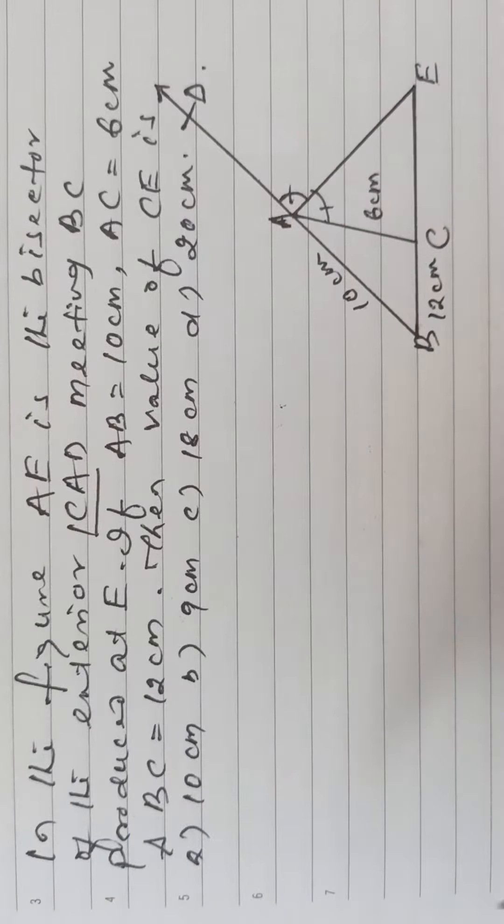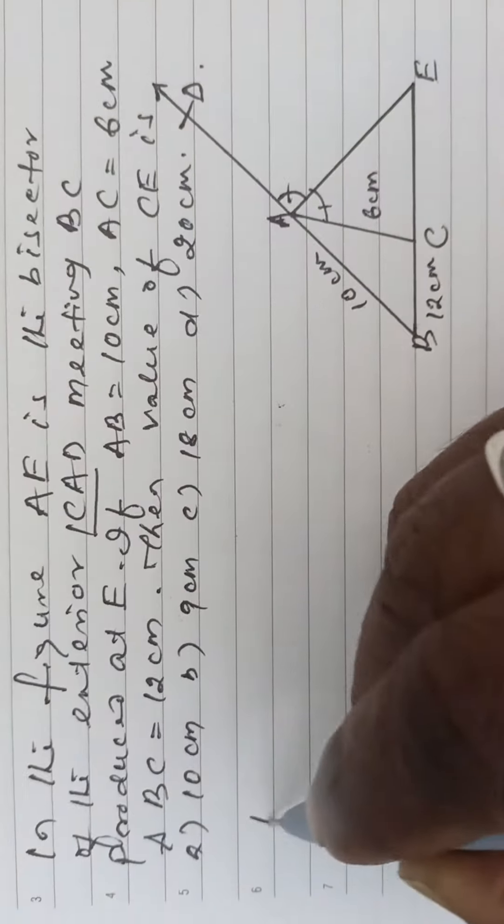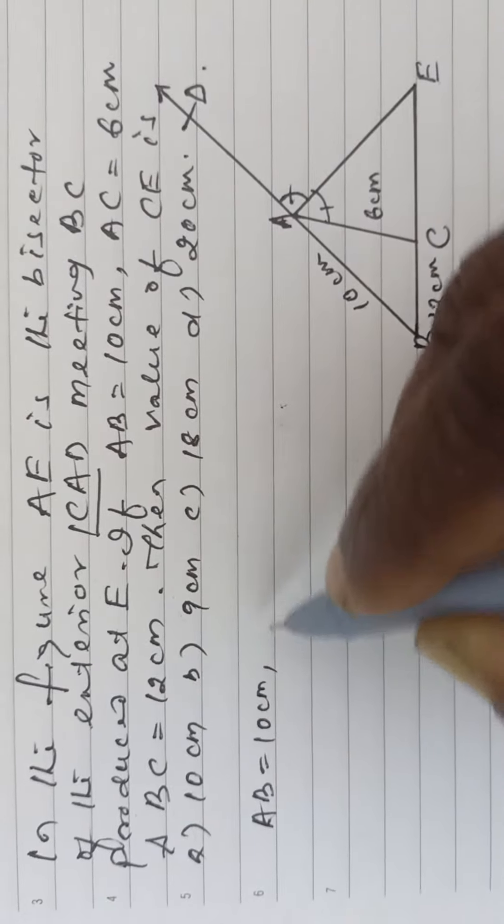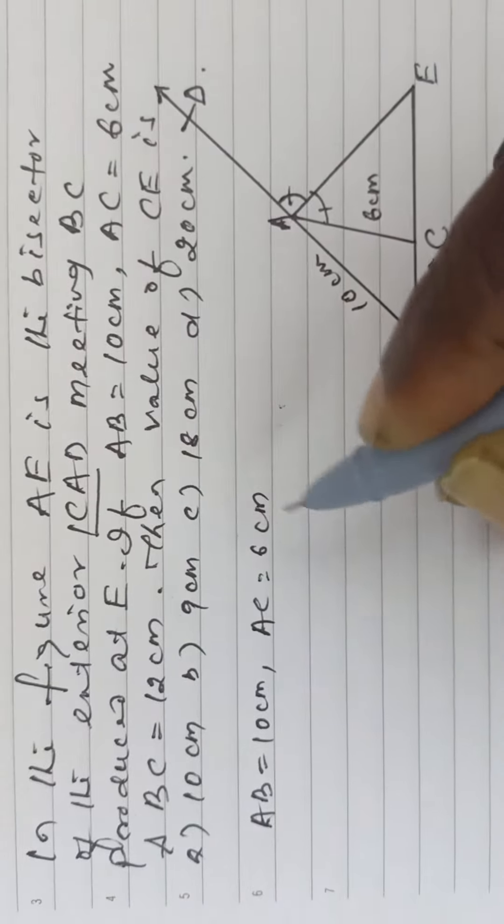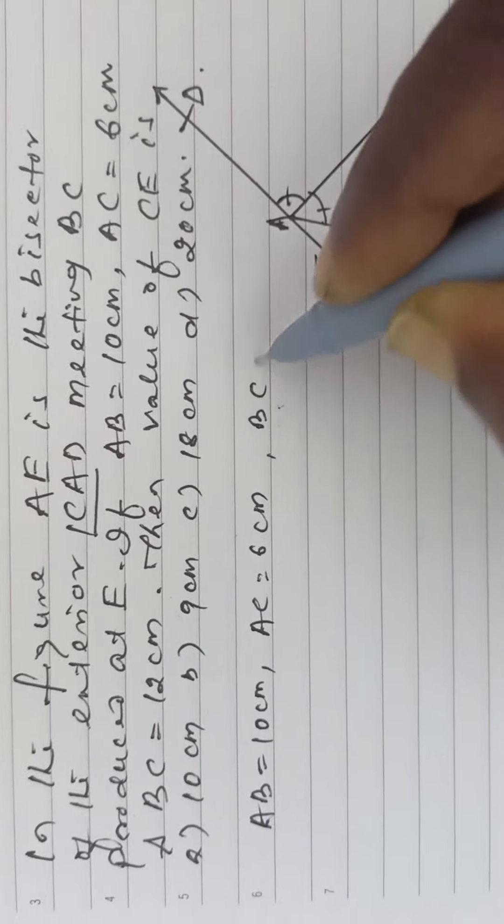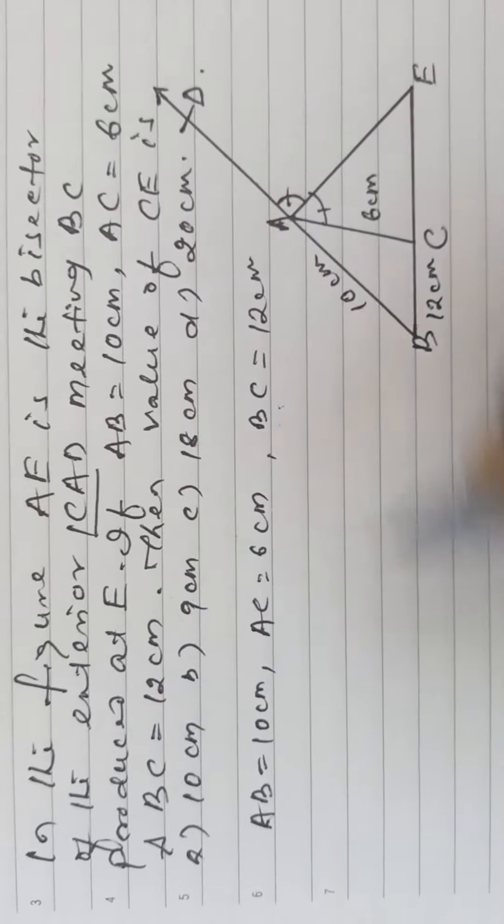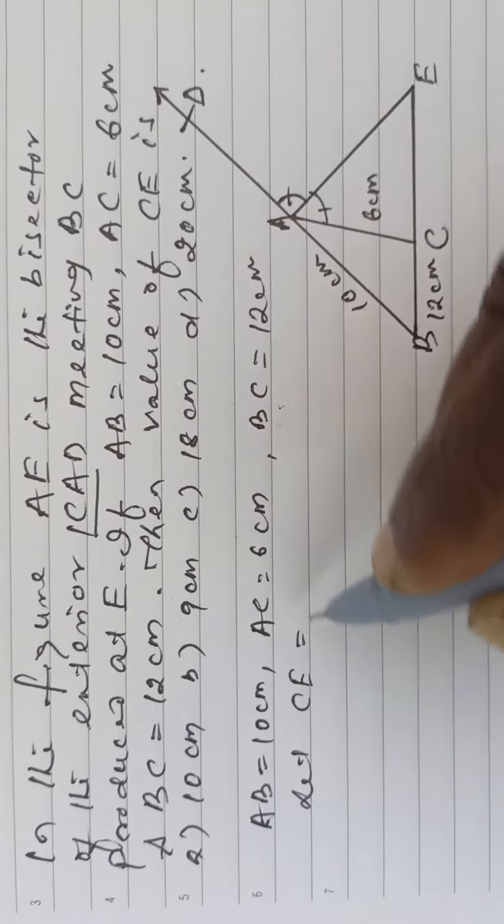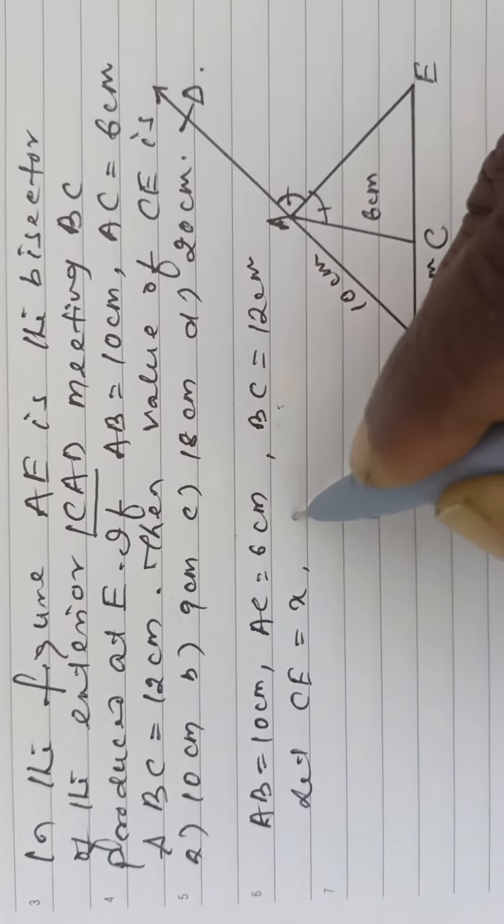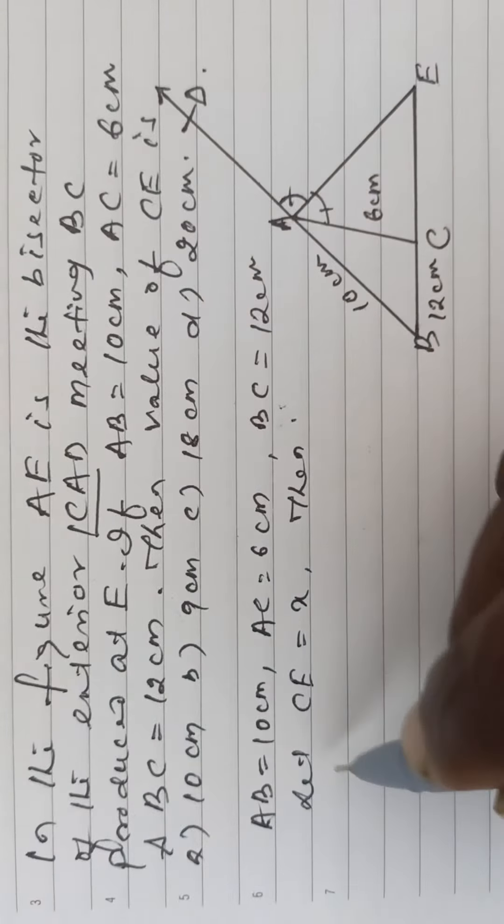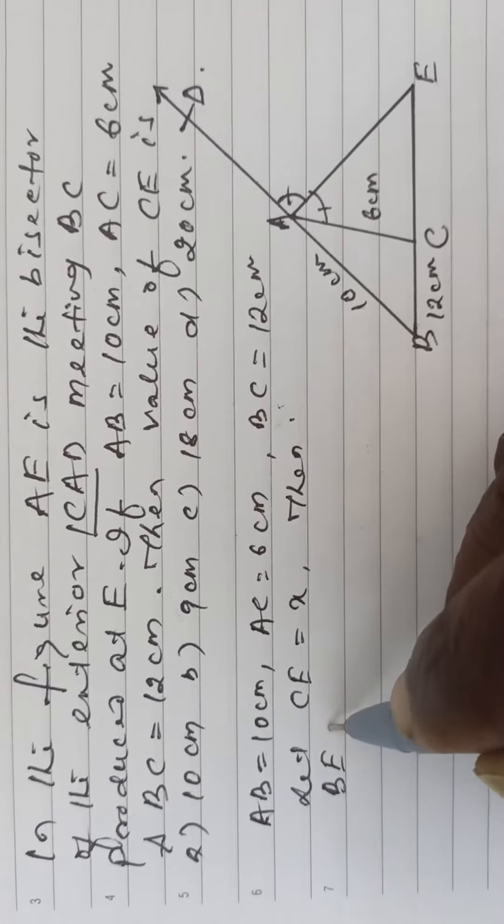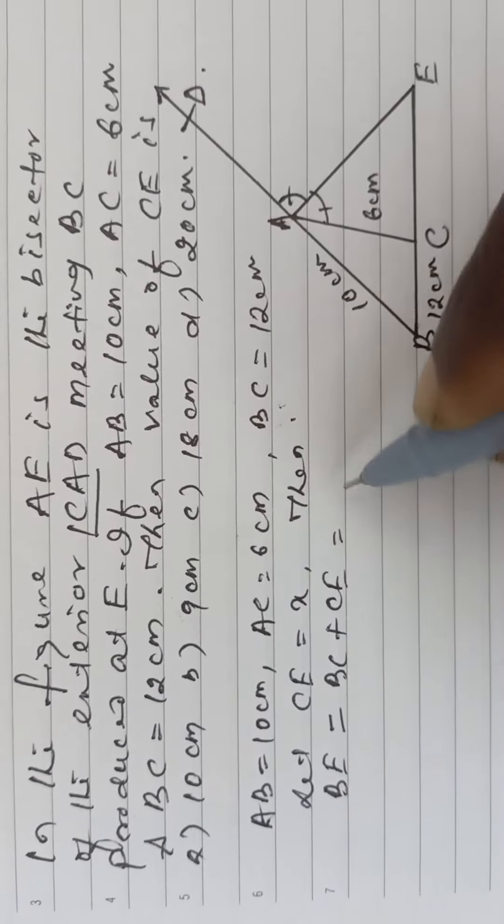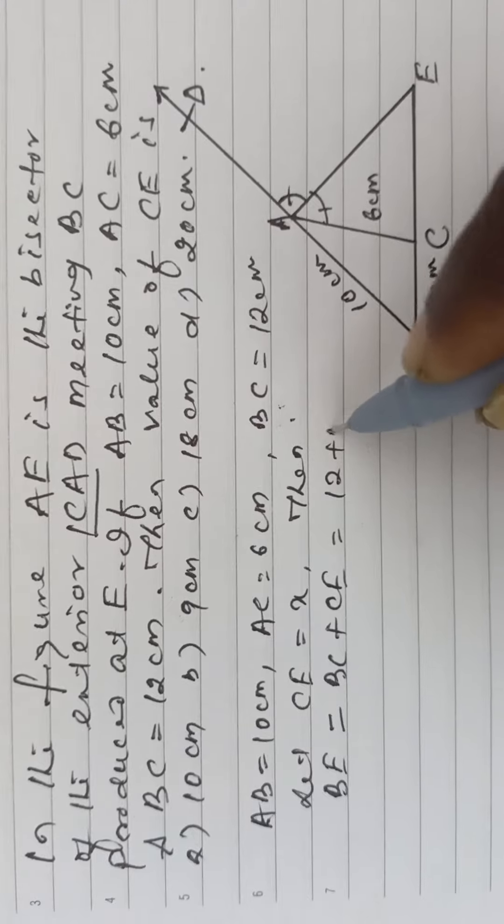Given AB is equal to 10 cm, AC is equal to 6 cm, BC is equal to 12 cm. Let CE is equal to X, then BE is equal to BC plus CE, that is 12 plus X.